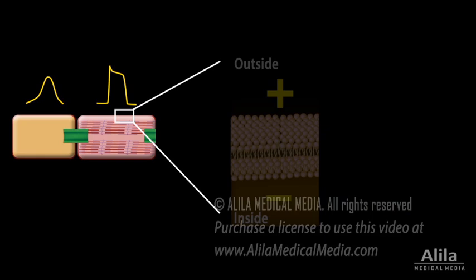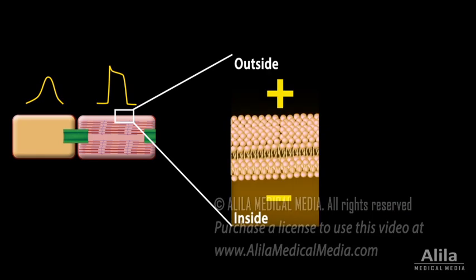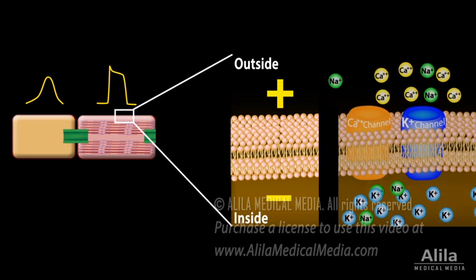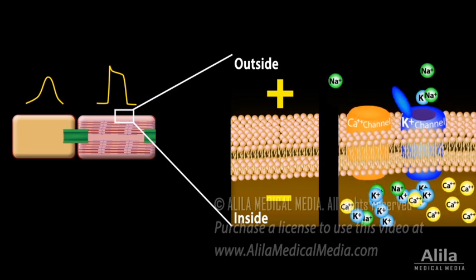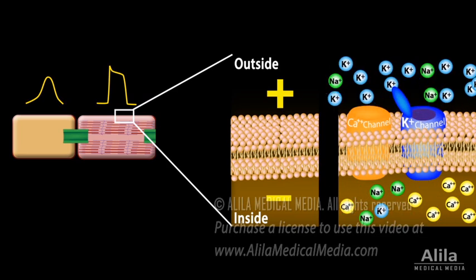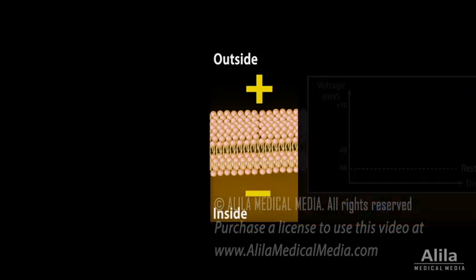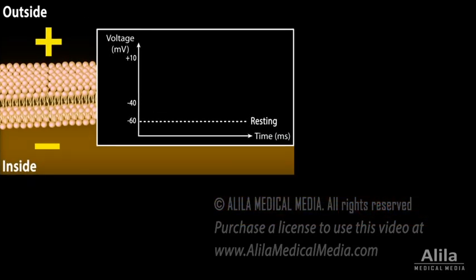An action potential is essentially a brief reversal of electric polarity of the cell membrane, made possible by the flow of ions in and out of the cell through specific ion channels. In a resting cell, the membrane voltage is usually negative, meaning the cell is more negative on the inside.